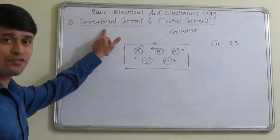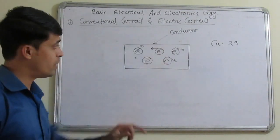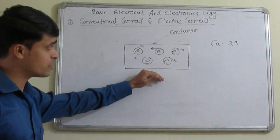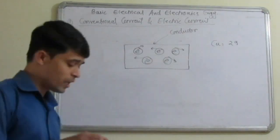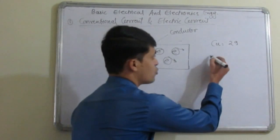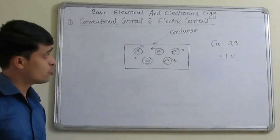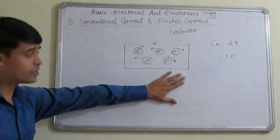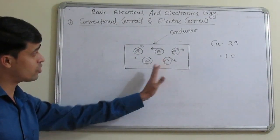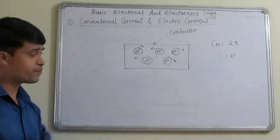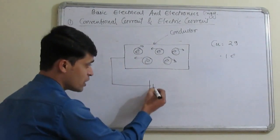First, what is the difference between the conventional current and the electric current? We are considering one conductor. Suppose it is of copper, having atomic number 29. Because of that, the last orbit has one electron. So, a conductor is the combination of atoms, therefore it is the combination of many electrons revolving or moving in any direction.